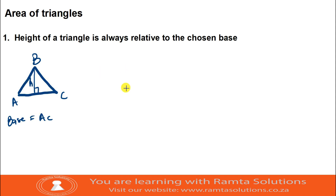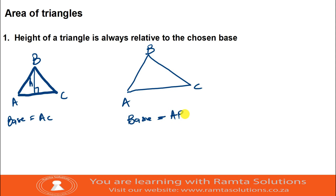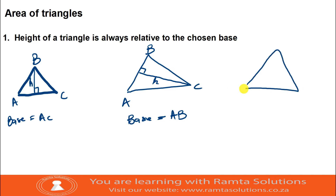Height is always perpendicular to the base. Now let me draw the very same triangle ABC and I'm going to choose my base to be AB. Where is my height? Remember, height is always perpendicular to the base. I think I don't have to do a third one - you have an idea now. The height of a triangle is always relative to the chosen base. It doesn't mean your height must always be perpendicular to the ground.